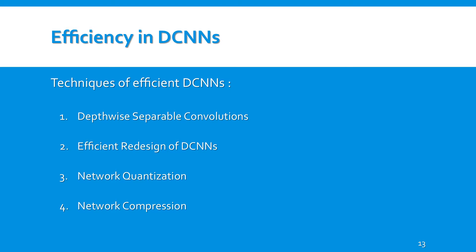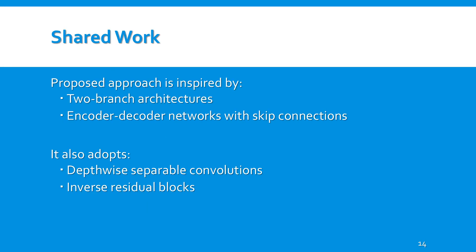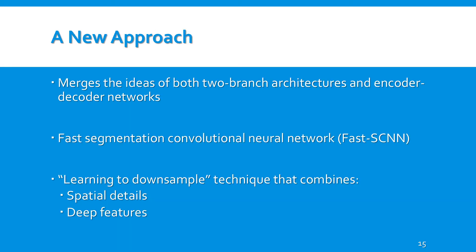This reduces floating-point operations and convolutional parameters. The authors' proposed model is inspired by two frameworks: two-branch architectures and encoder-decoder networks with skip connections. In addition, they adopt depthwise separable convolutions and inverse residual blocks.